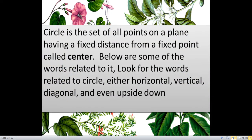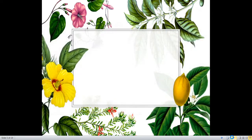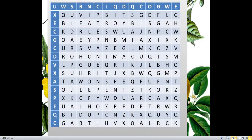First, let us start with the definition of circle. Circle is the set of all points on a plane having a fixed distance from a fixed point called center. Below are some of the words related to it. Look for the words related to circle, either horizontal, vertical, diagonal, and even upside down. So here is your find the words related to our circle. We have five words there. Good luck if you find it all.